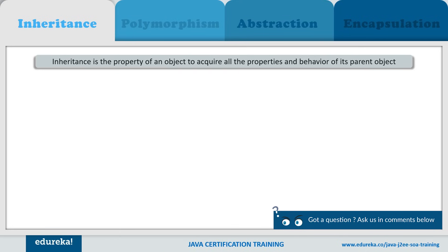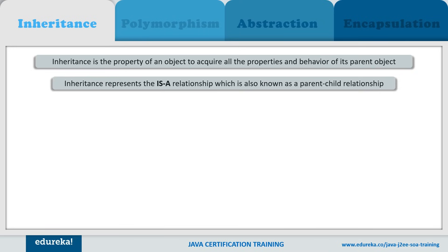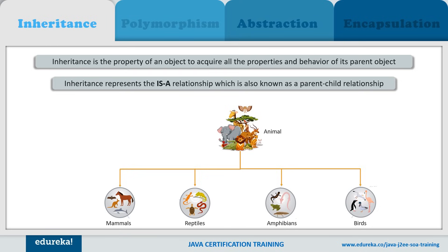Inheritance is where the properties of an object are acquired by another object — it's called an 'is-a' relationship, a parent-child relationship. For example, animal is a parent; mammals, reptiles, amphibians, and birds are the children. Bird, reptile, mammal — each is an animal. We also call this concept generalization because we are generalizing many different types as one single type. Animal is called the super or parent class, while mammals, reptiles, amphibians, and birds are the sub or child classes.